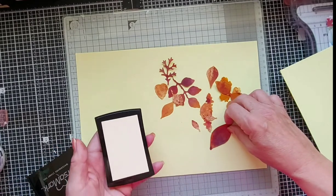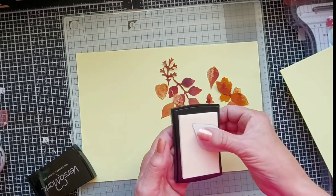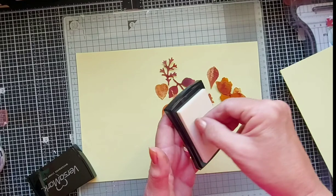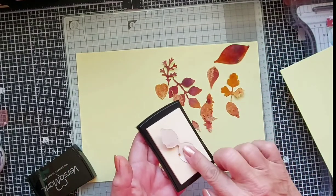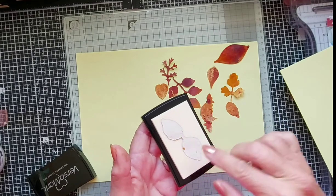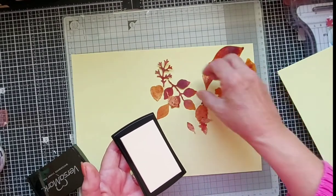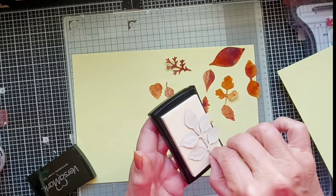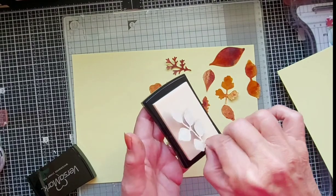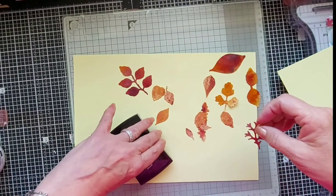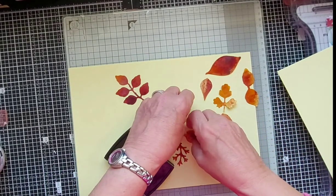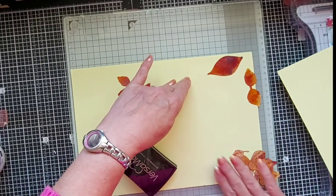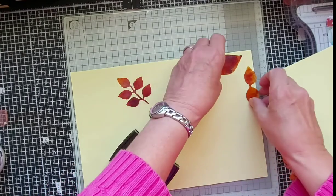So I'm using Versamarker ink and just making sure it's well and truly sticky. I'll do this one, I like this one, it's nice. Give it over a bit. Put the lid on the ink. I'll just move these out of the way for now.